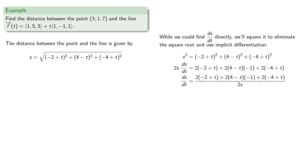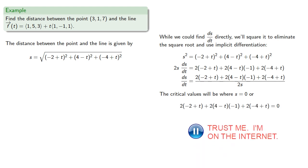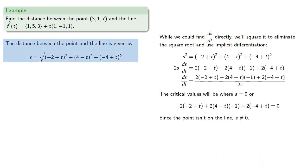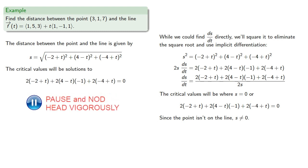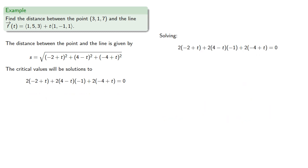The critical values will be where our denominator is zero or our numerator is zero. Since the point isn't on the line, s, which is the distance between the point and the line, can't be zero. And so the critical values will be the solutions to numerator equals zero. Solving gives us t equals 10 thirds.